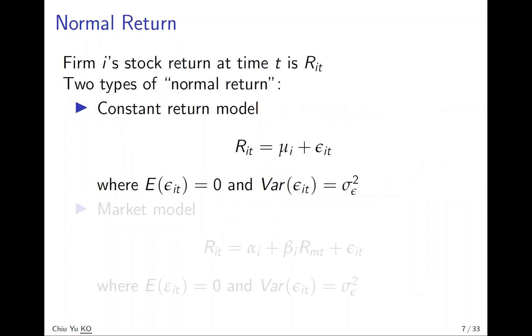First we define normal return. Normal return for stock i at time t is denoted r subscript it. There are two types. The first is the constant return model. The idea is there's no trend. Return fluctuates around a mean mu_i, following some random movement with mean zero and constant variance.